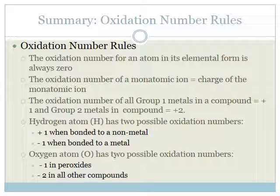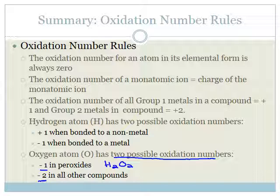Oxygen atoms also have two possible oxidation numbers depending on how they're bonded. If they're in peroxides — for example H₂O₂ (hydrogen peroxide) — they have an oxidation number of minus one. In any other compounds, they are minus two — for example, in water, oxygen has an oxidation number of minus two.